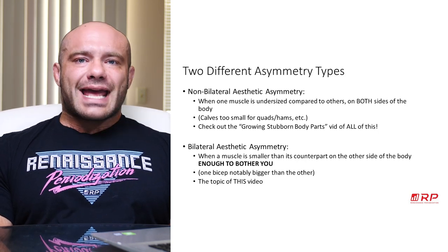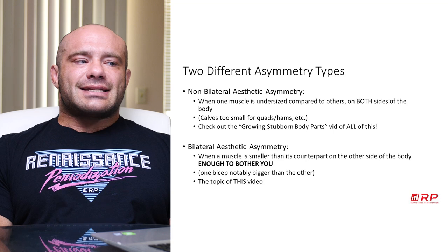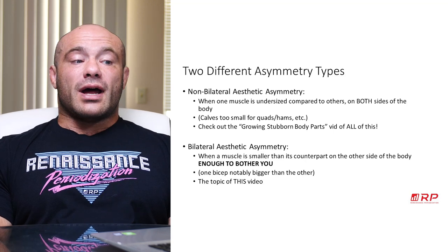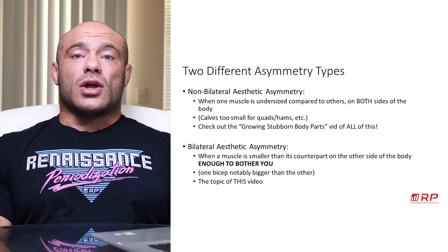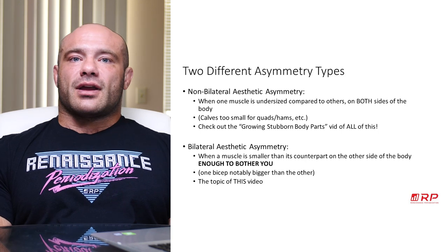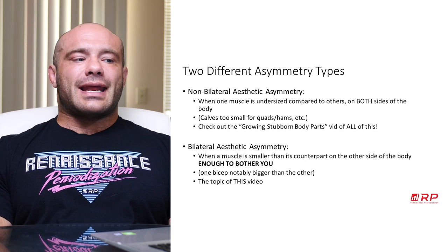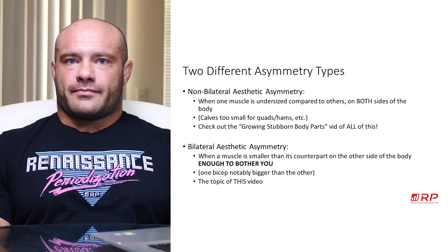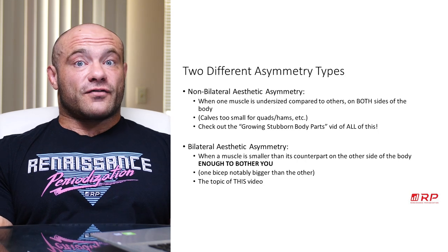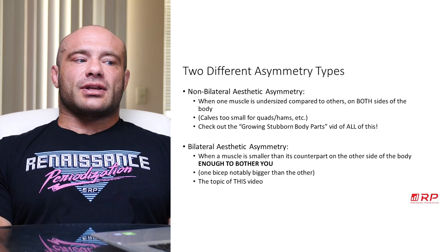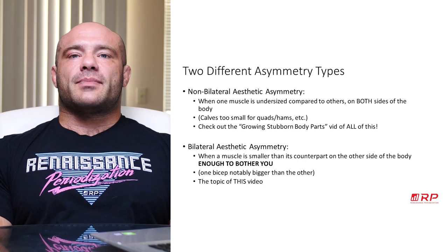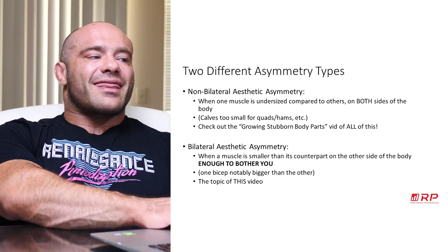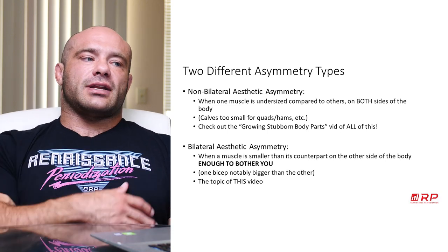What we're going to talk about today is bilateral aesthetic asymmetry, which means one muscle is smaller than its mirror muscle on the other side of the body by enough to bother you — like one bicep is notably bigger than the other. What do we do about that? That is the topic of today's video.